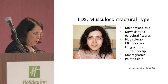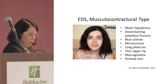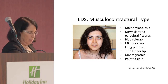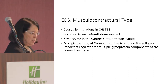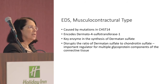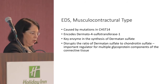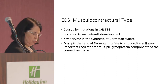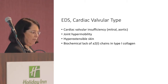The musculocontractural type presents with malar hypoplasia, downslanting palpebral fissures, blue sclerae, microcornea, long philtrum, macrognathia, and a pointed chin. It is caused by mutations in dermatan-4-sulfotransferase, a key enzyme in the synthesis of dermatan sulfate — an important glycoprotein in connective tissue.